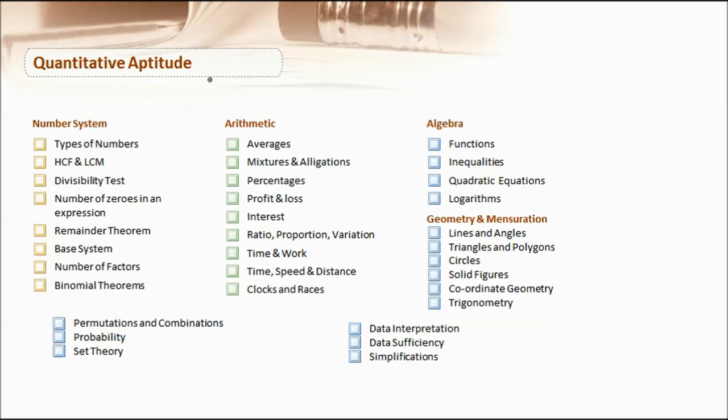Broadly, we have divided quantitative aptitude into six categories. First is the number system that will take you through the introduction of numbers, then HCF and LCM, then divisibility tests. These are all the basic concepts you should know before starting with quantitative aptitude preparation.